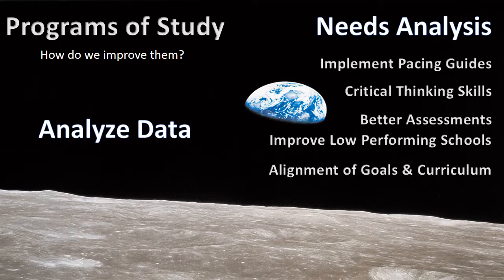Improving a program of study is not dependent upon following a particular model — it is a series of processes, and each area that needs improvement is unique and requires a unique process. Once data has been gathered and analyzed, it's up to the curriculum development team to identify an area to improve and determine the best steps to take. For example, after conducting a needs assessment you might find that pacing guides need to be implemented, or that you're going to focus on critical thinking, or teach to fidelity — which represents a whole philosophical change.